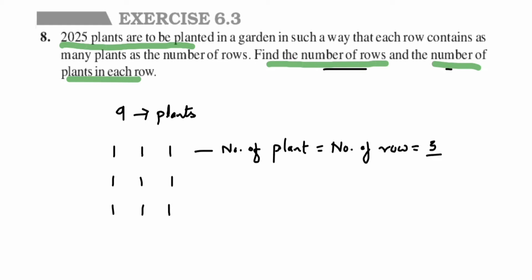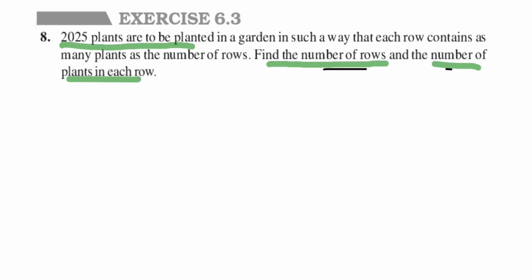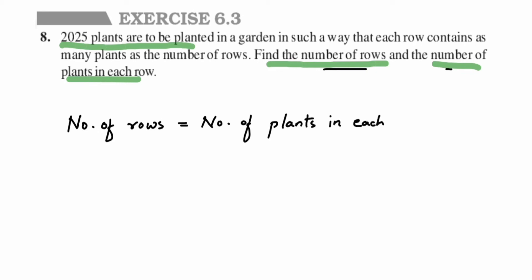How do we get this? Nine is a perfect square, and the square root of 9 is 3 — or 3 squared is 9. Similarly, in the question, 2025 is also a perfect square number. So the number of rows equals the number of plants in each row, which equals the square root of 2025.